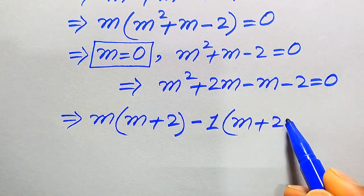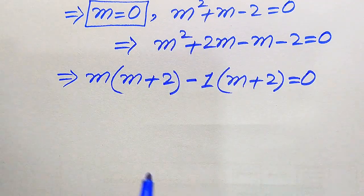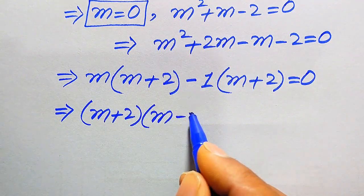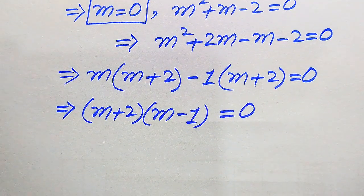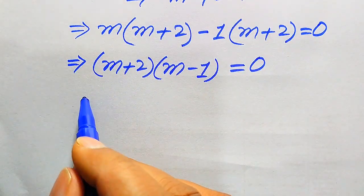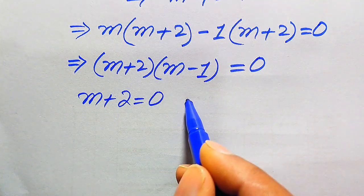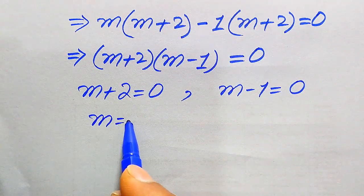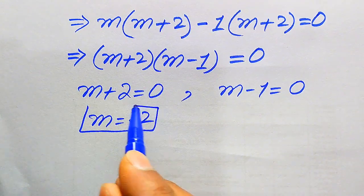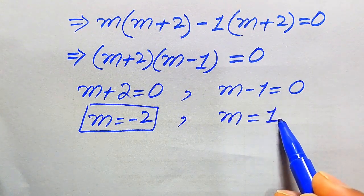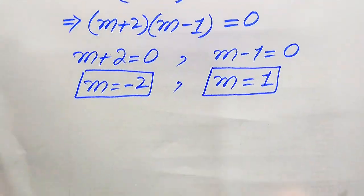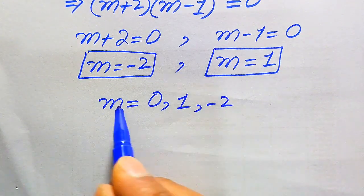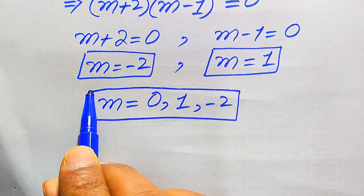We take (m + 2) as a common factor, giving (m + 2)(m − 1) = 0. Dividing into two cases: m + 2 = 0 gives the second root m = −2, and m − 1 = 0 gives the third root m = 1. So we have three roots of the given equation: m = 0, m = 1, and m = −2.